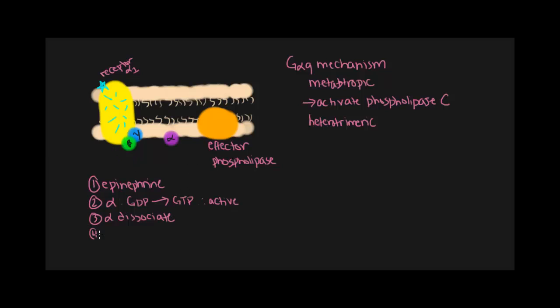Once it dissociates, the alpha subunit will bind to our effector protein, which in this case is phospholipase C. Once the alpha subunit is bound to phospholipase C, phospholipase C becomes active. And when this occurs, it sets off a chain of events.